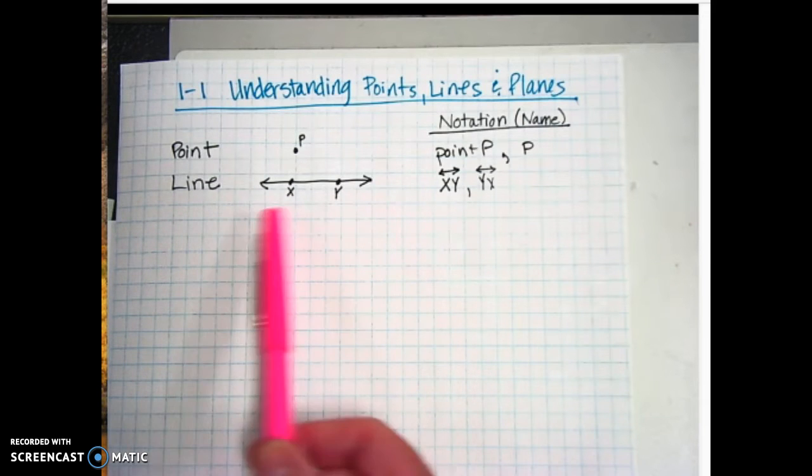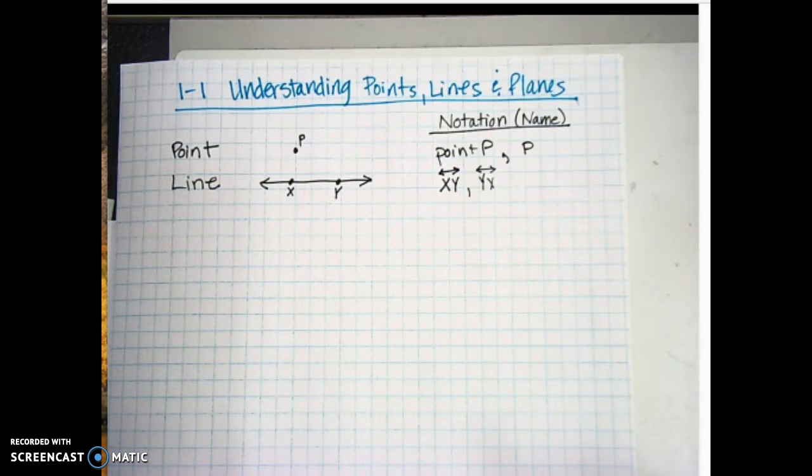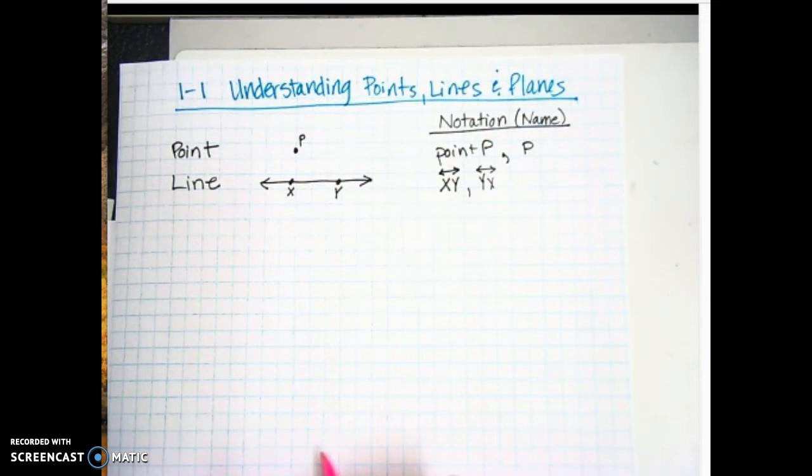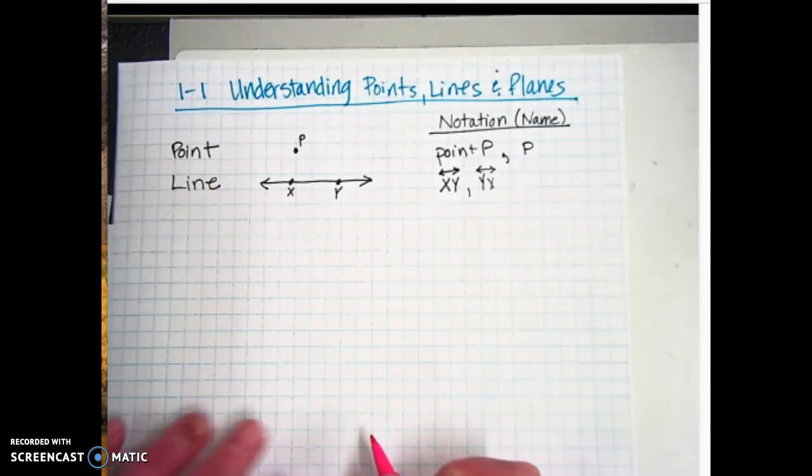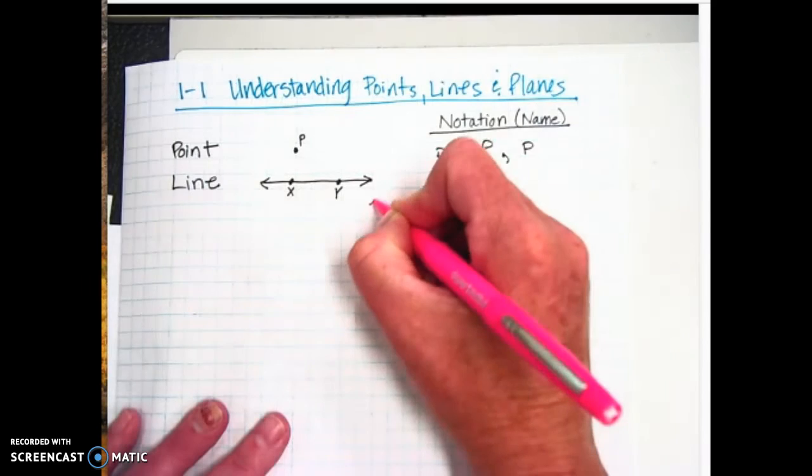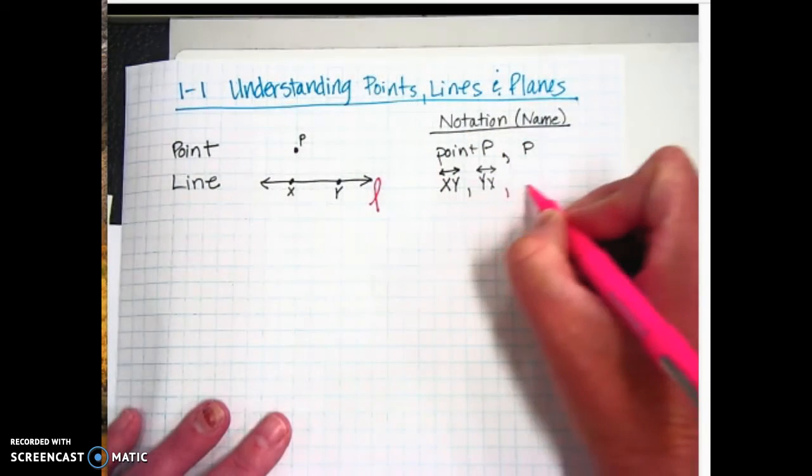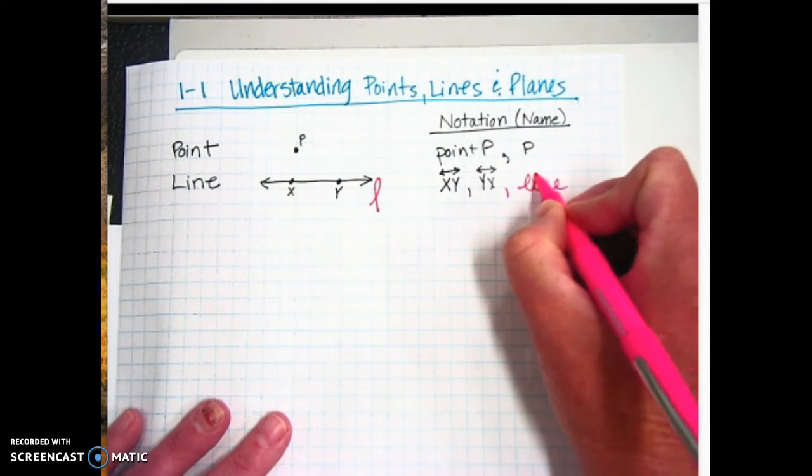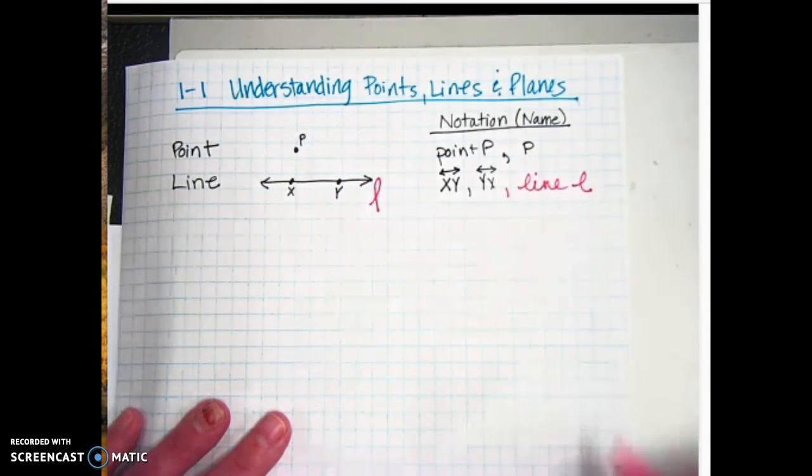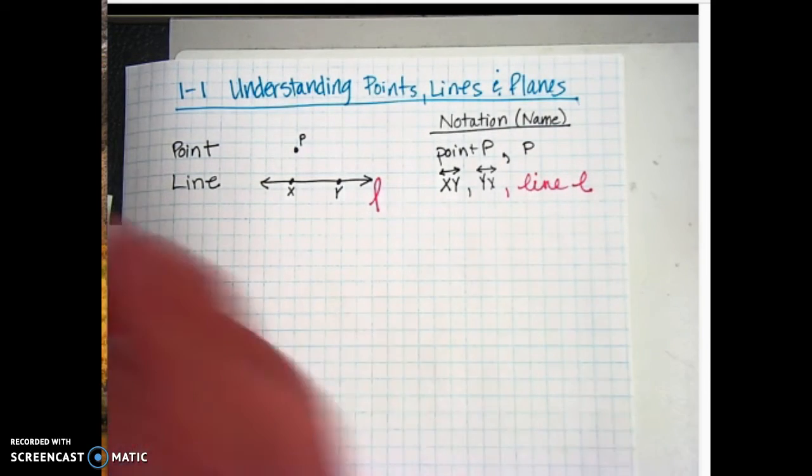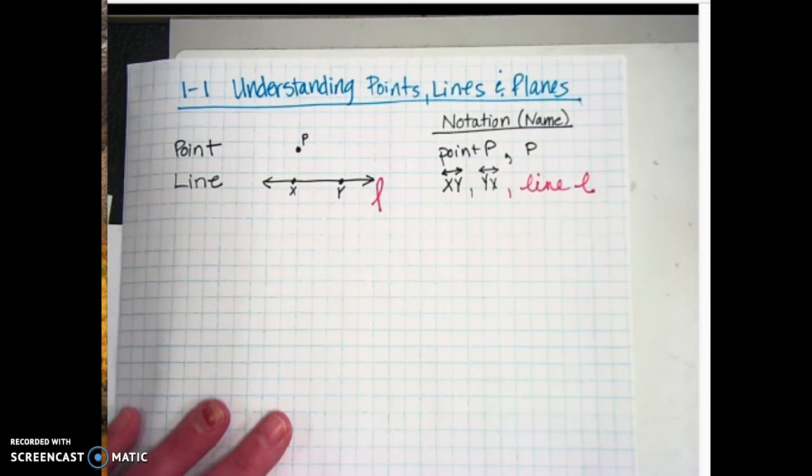Why? Because it goes on forever in both directions. Every once in a while, it won't be labeled like that. It'll just have a cursive, lowercase letter, like a lowercase L. And you would just call it line L. Not as often, but you see it sometimes.